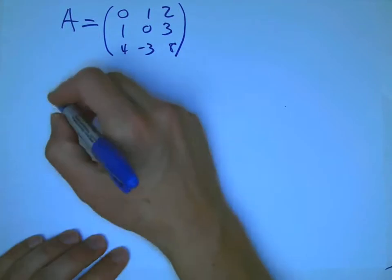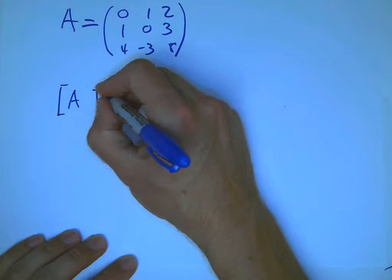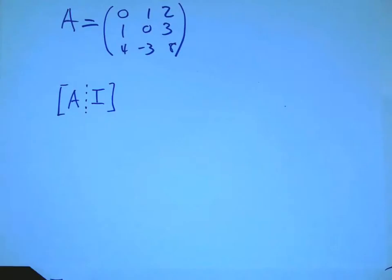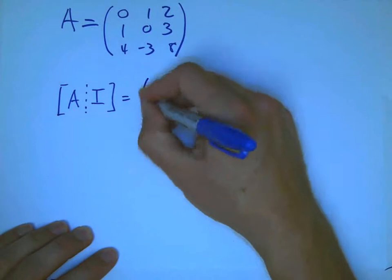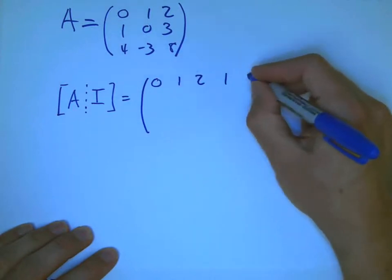And the way it works is we make an augmented matrix with A and I. Now, in our book, he doesn't actually put them together as an augmented matrix, he just writes them next to each other. But most people just write it as an augmented matrix.